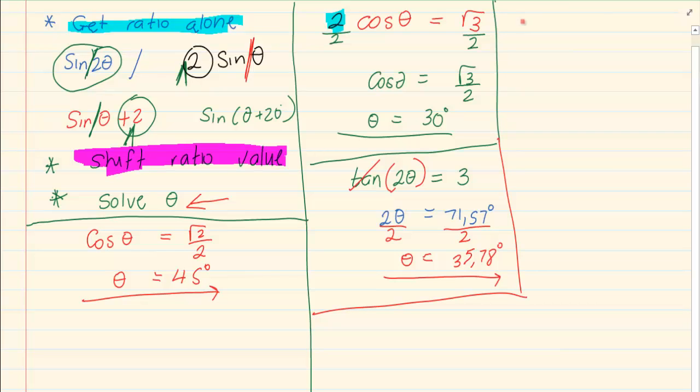What if I had 2 sin(θ + 20) = √3? Now if you look at it, the θ + 20 is in a bracket and it's next to the sin. So we can't move that.